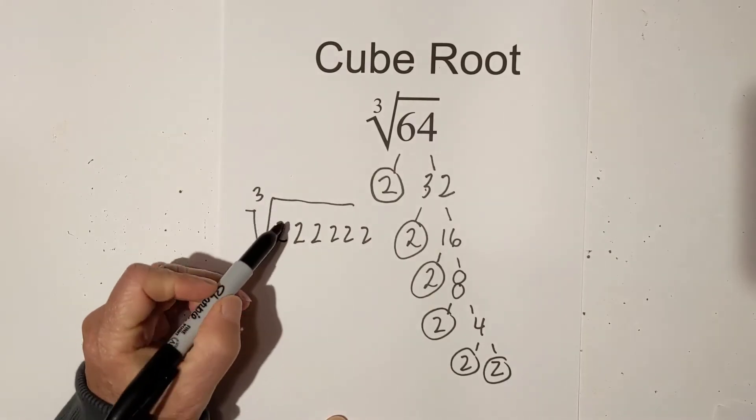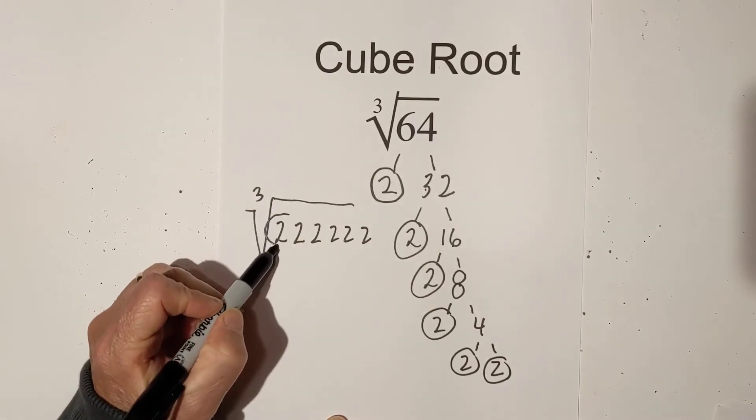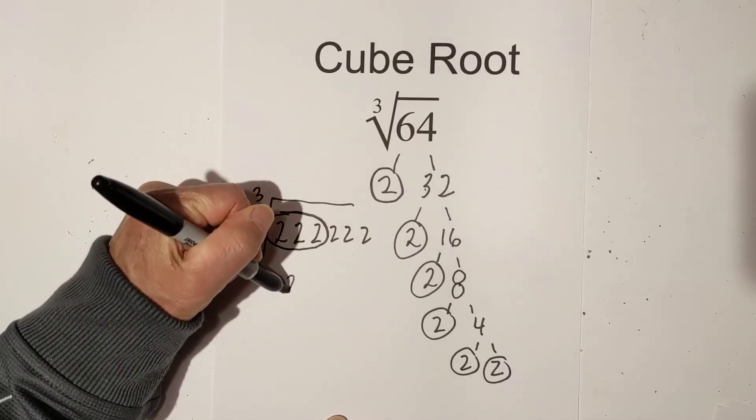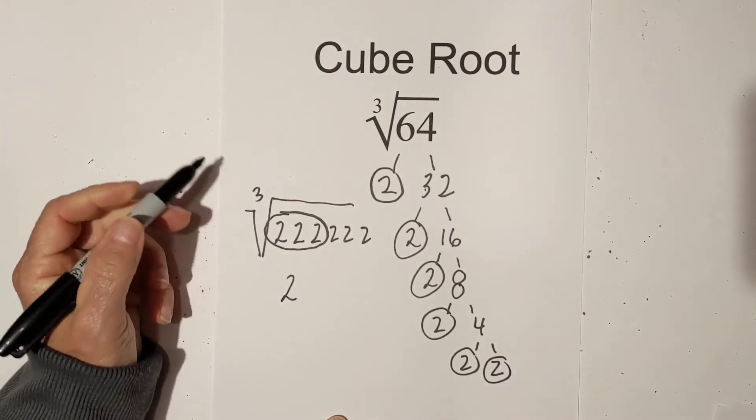Now, since it is a cube root, I can pull out triplets or groups of 3. So I can pull this 2 out from underneath the sign.